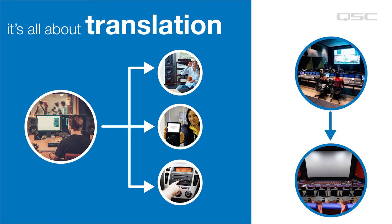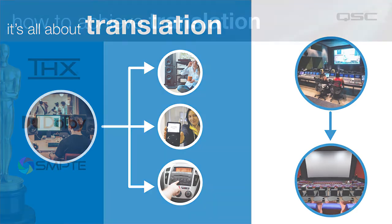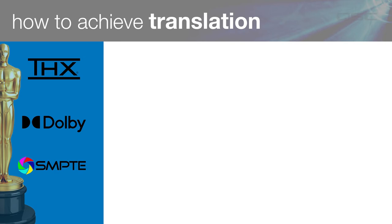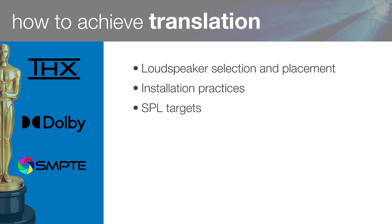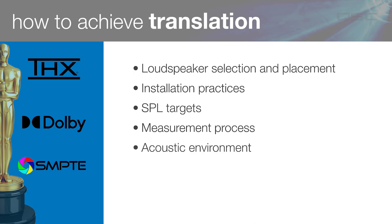But that's not the case with movie theaters. The function of a movie theater is to recreate what was heard on the dubbing stage when the film was mixed. We call this translation. To assist with this process, cinema standards have been developed over the course of the last 100 years or so by organizations that govern areas like loudspeaker selection and placement, installation practices, sound pressure level targets, a very specific sound measurement process, and a well-defined acoustic environment designed to take the room out of the mix. These same standards are also used to design the dub stages where films are mixed. The extent to which these standards are followed determines how close the translation is.